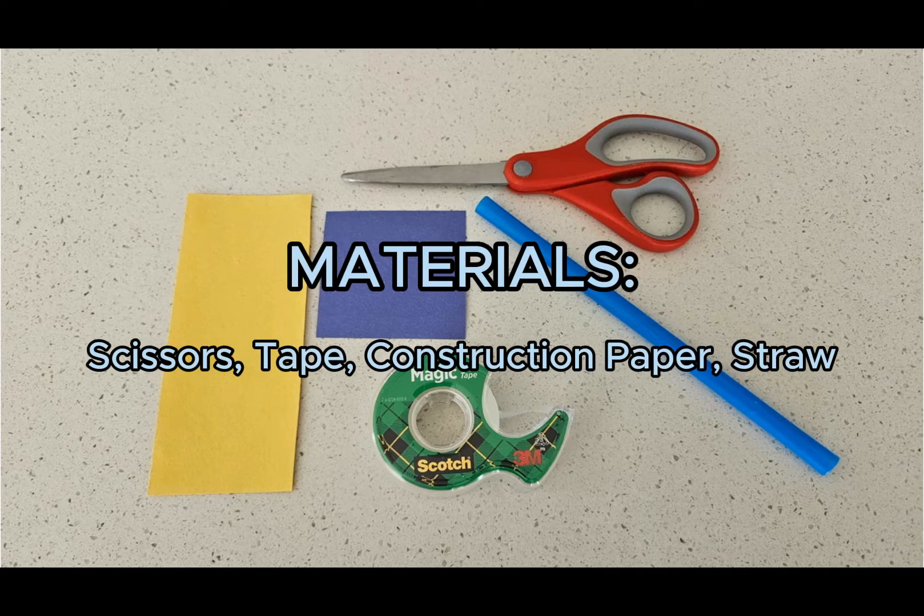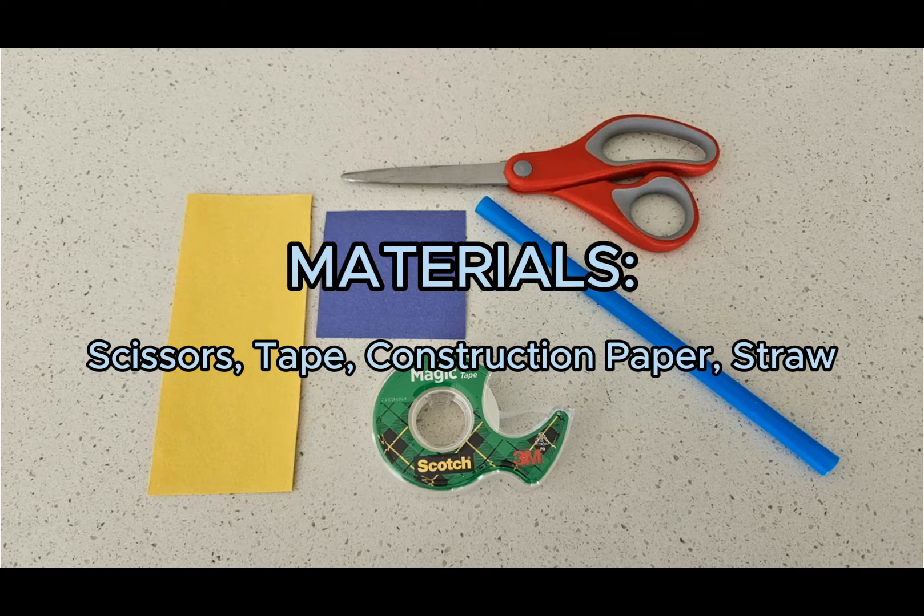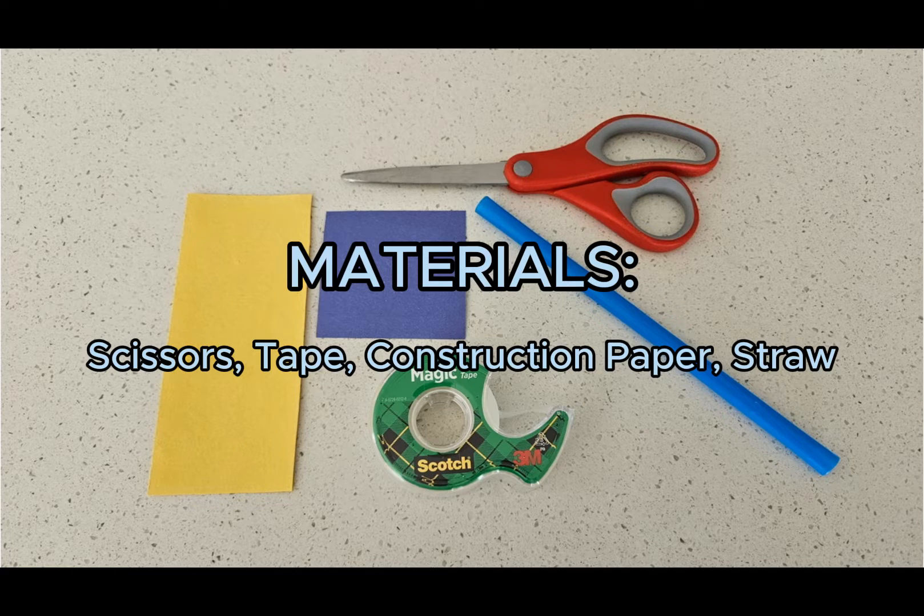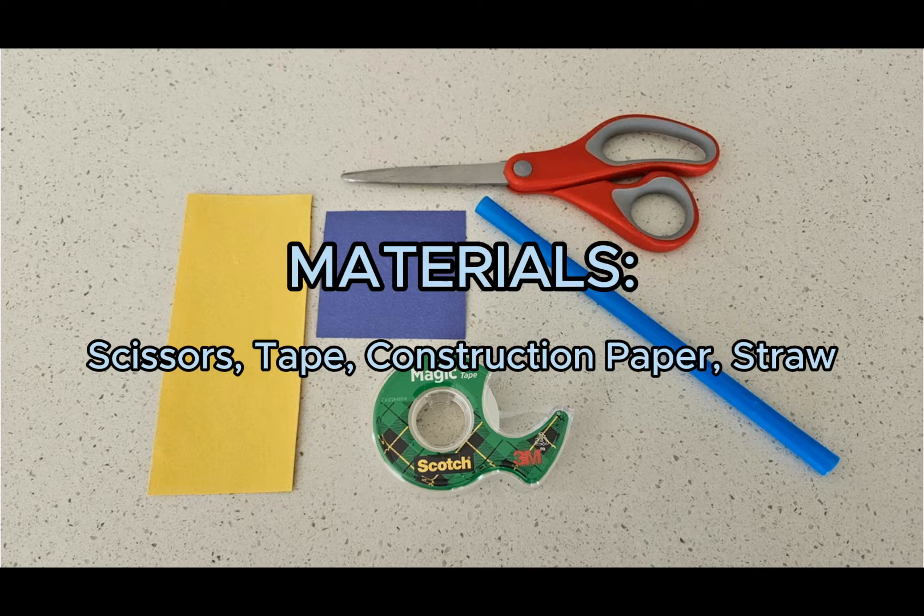Now that we know a little more about how rockets work, it's time to dive into building our own. The materials we will need for this activity are scissors, tape, construction paper, and a large straw.